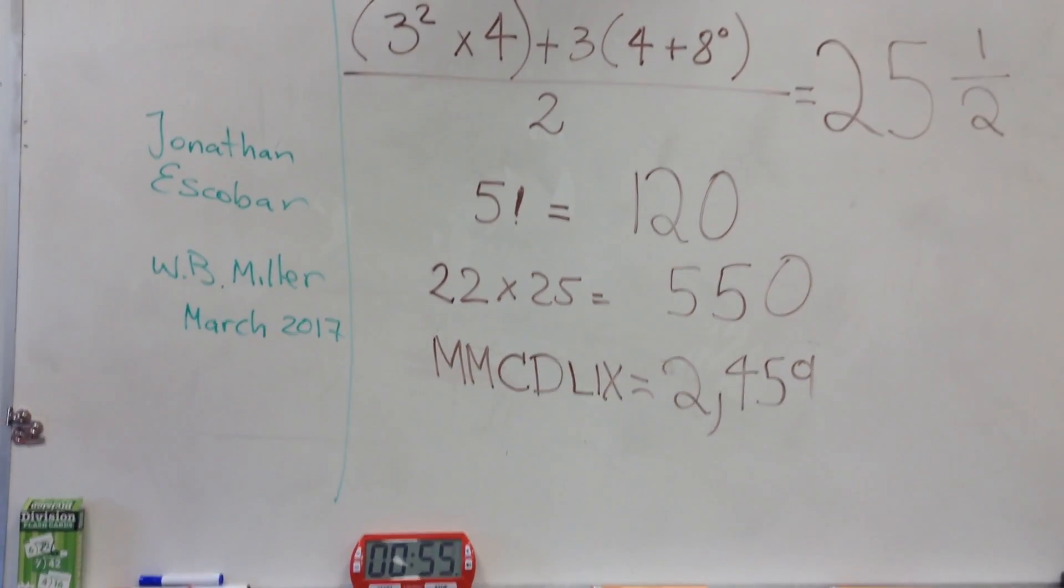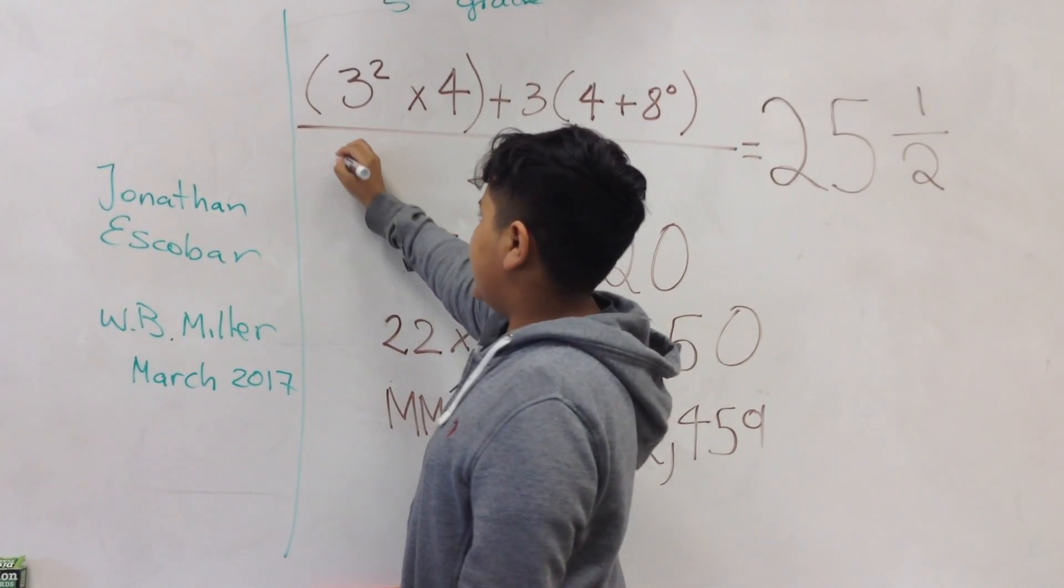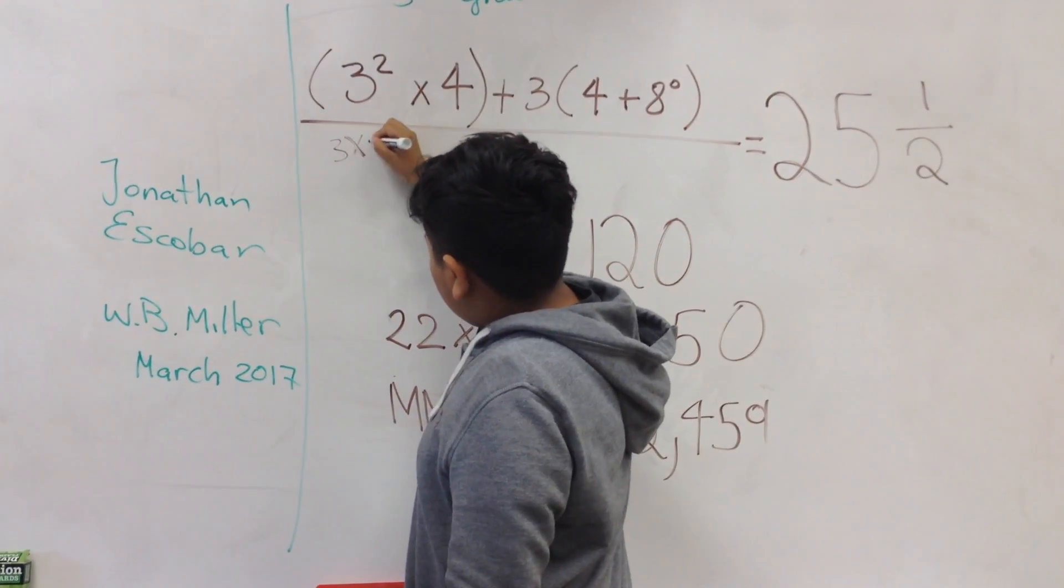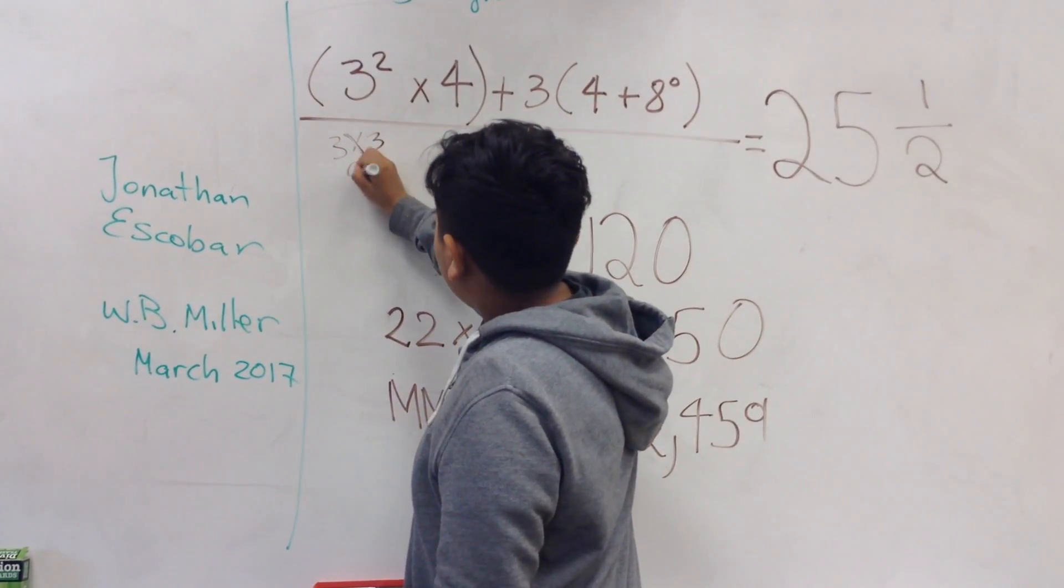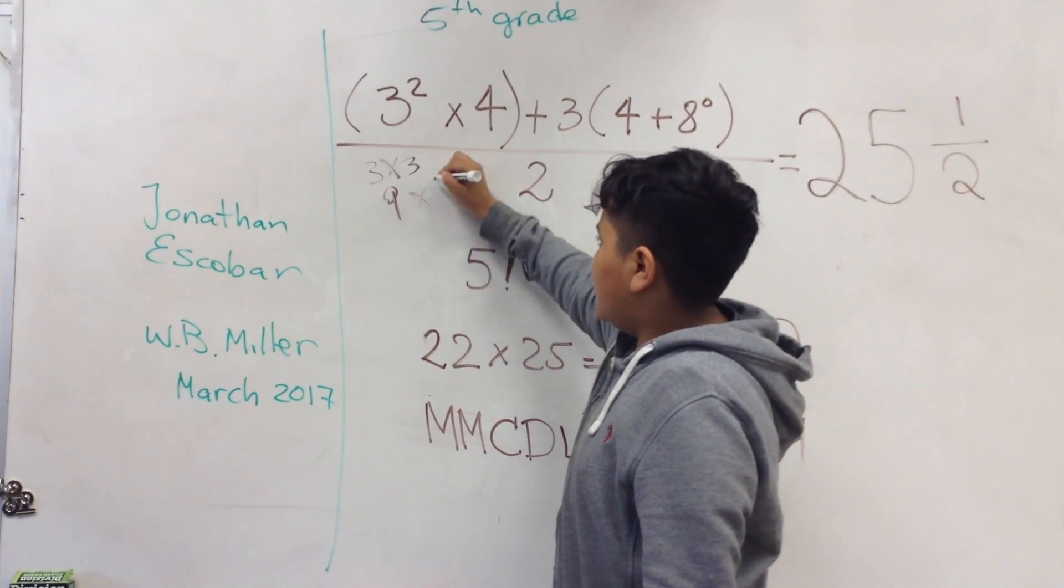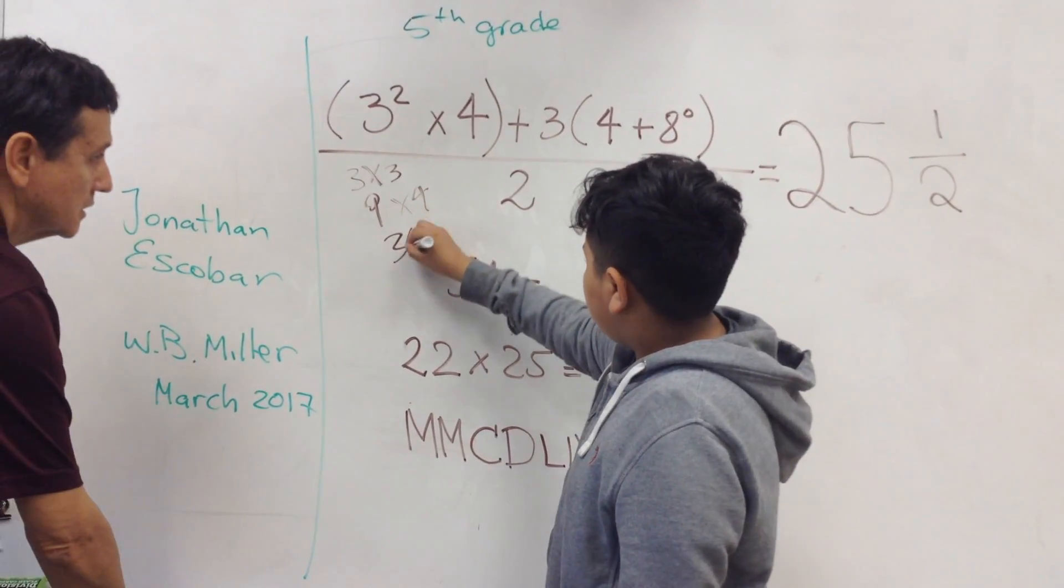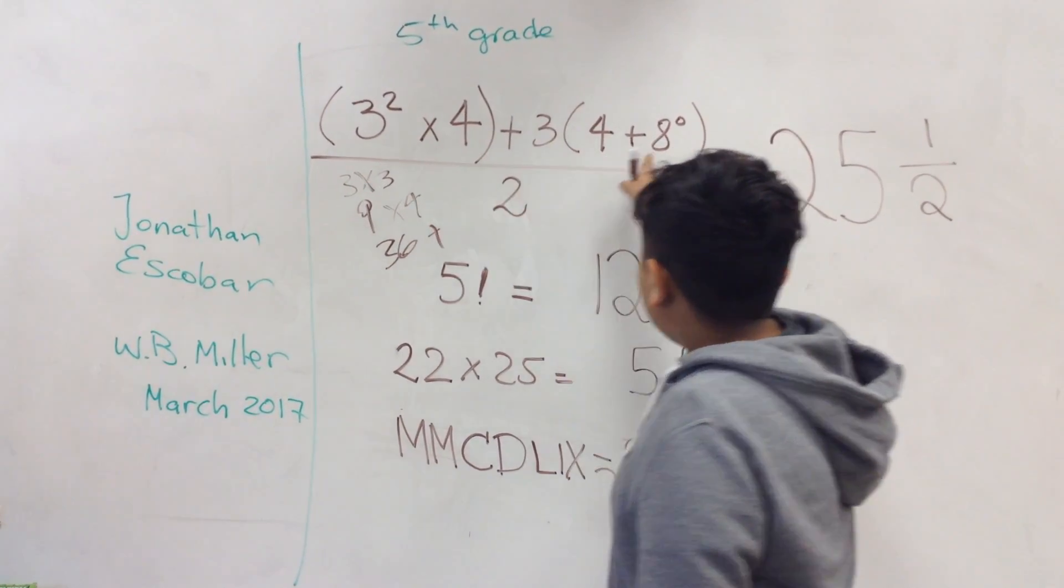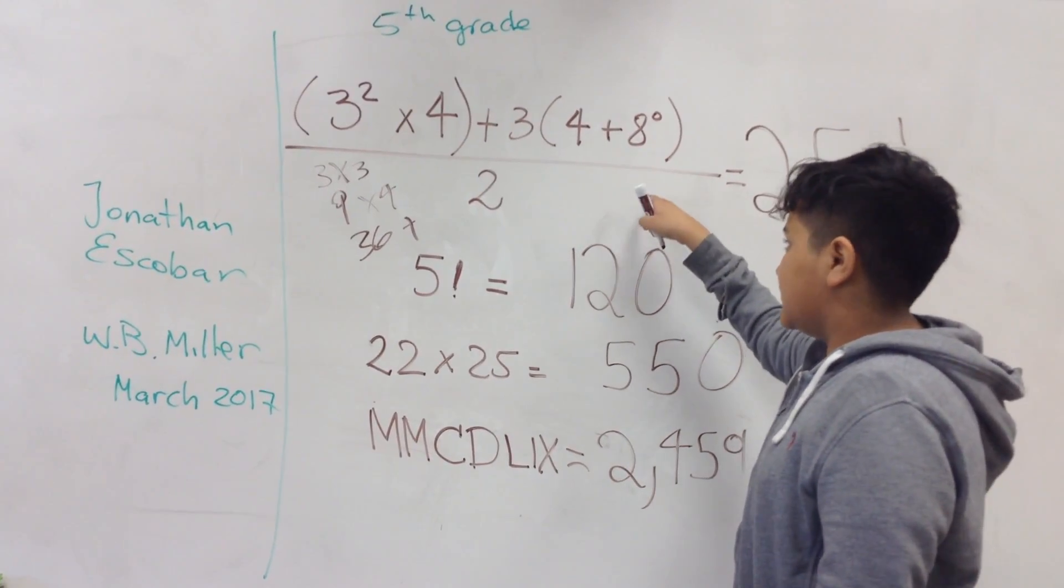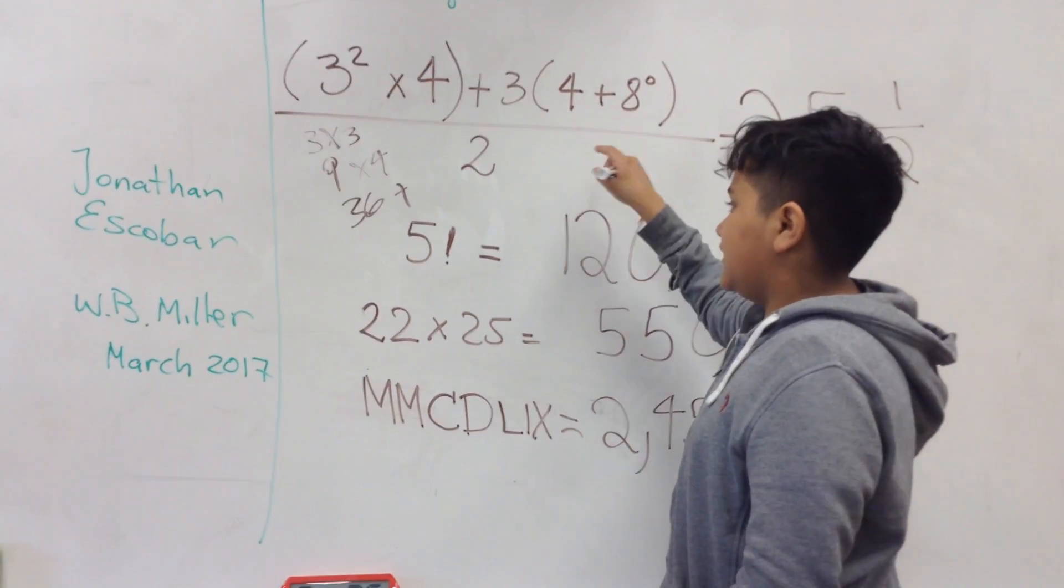Okay, now explain one by one. Okay, three to the power of two, that means three times three equals nine. Nine times four is thirty-six. So thirty-six plus eight to the power of zero is one. Anything to the power of zero is one. So one plus four is five times three, fifteen.